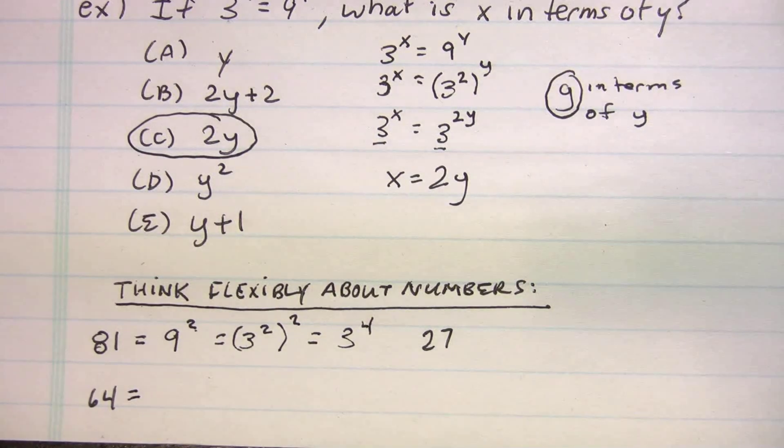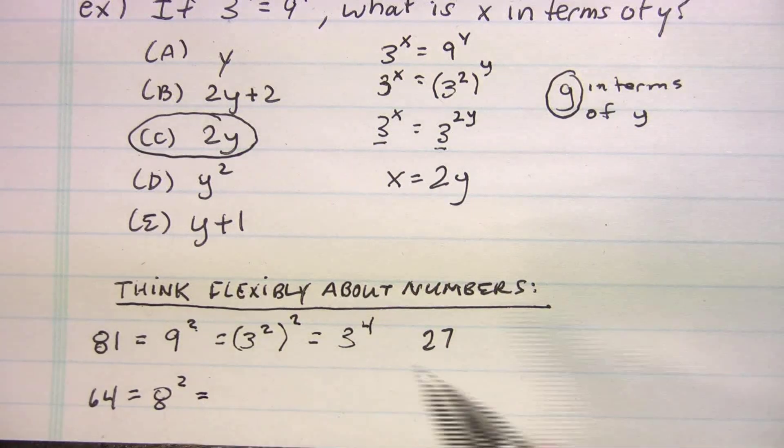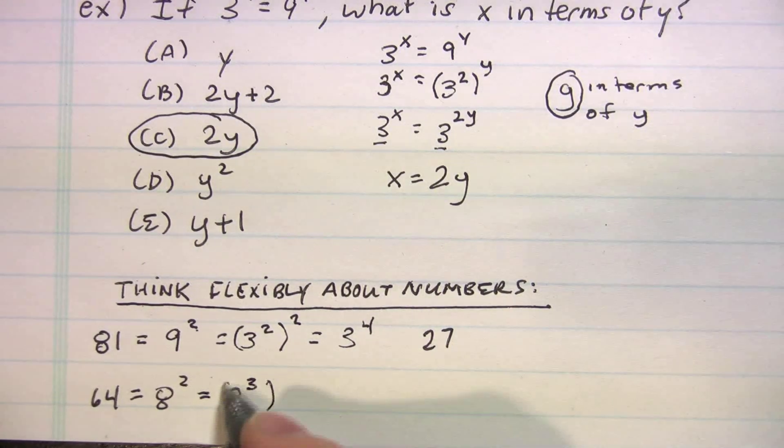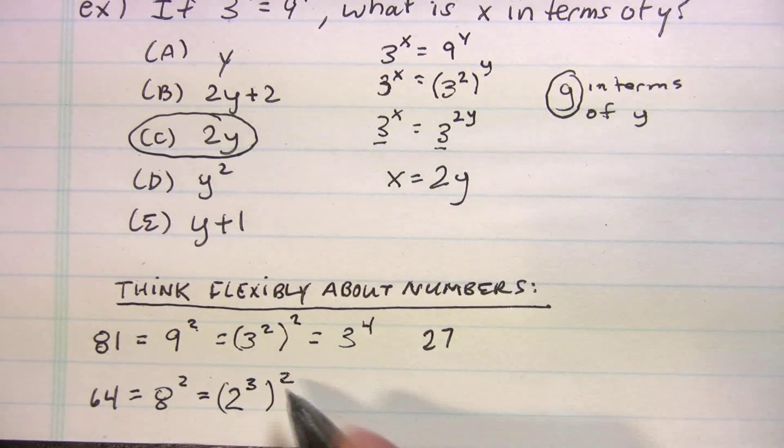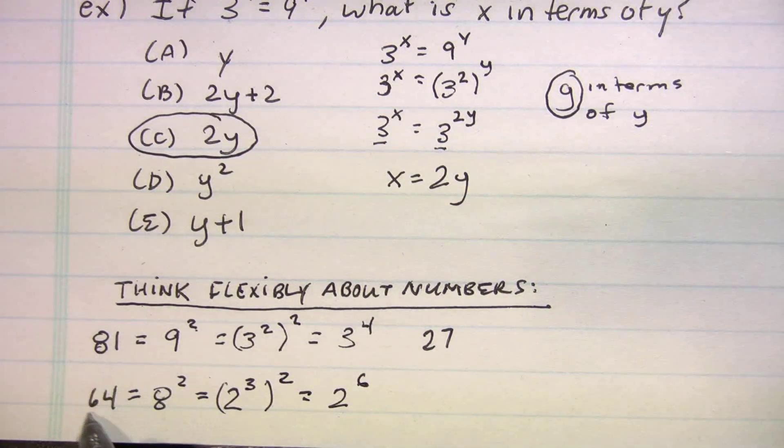64. 64 is gonna be 8 squared. And maybe some of you guys at home are saying, we're done. 8 squared. Well, 8, nice number to know, is 2 cubed. We can't forget about the 2. So, that's 2 to the 6th. So, 64 is equal to 8 squared, and that's equal to 2 to the 6th.